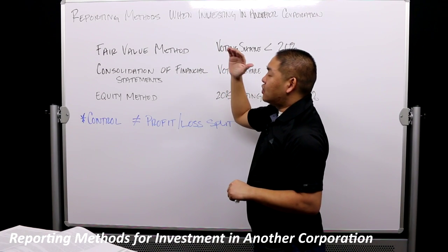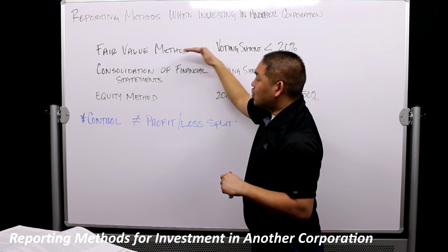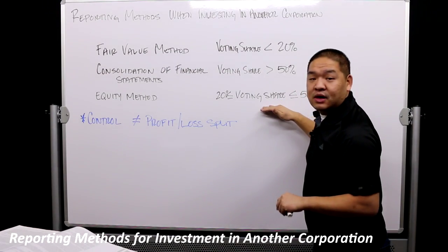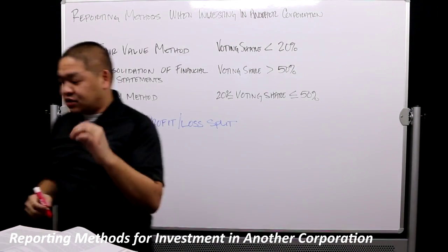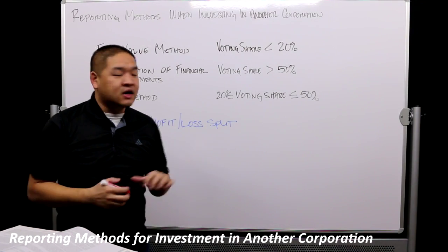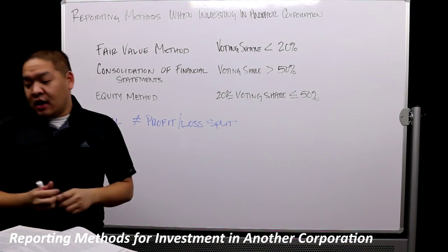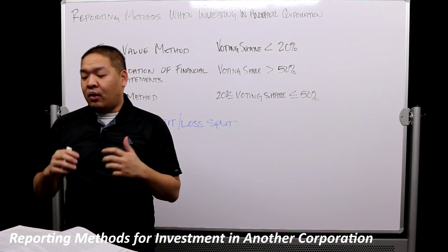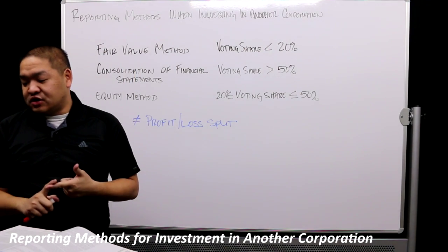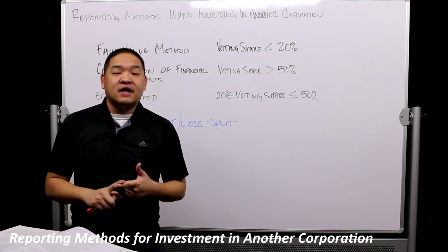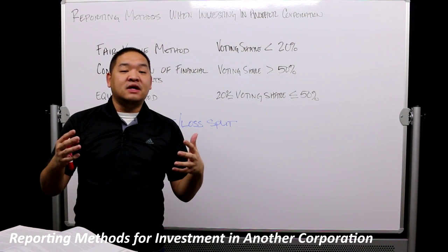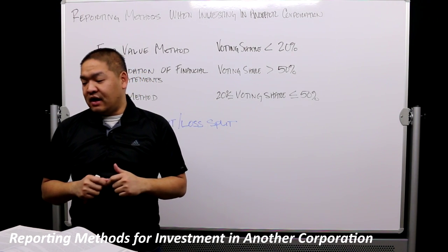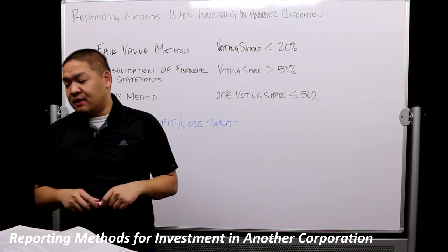When evaluating an investor's control over an investee, there are six factors to consider — and none is more important than the others. First, the investor's representation on the board of directors of the investee: if the investor holds five of nine seats, we would say they have control over the investee.